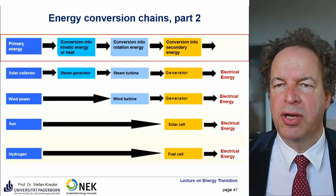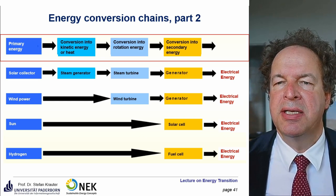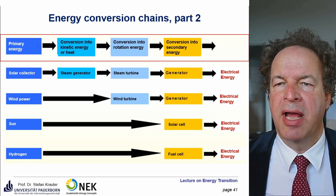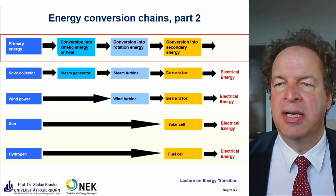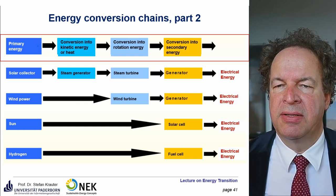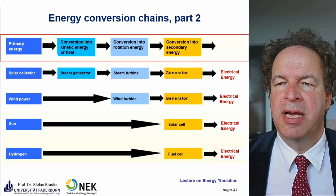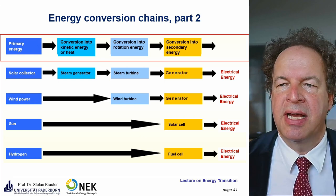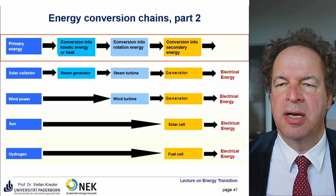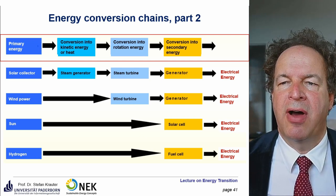The upper line is just the same basic principle. On the second line, if we use a solar collector, we can heat up water or any other medium, create steam, which goes to a steam turbine and drives a generator for electrical energy. Another possibility is wind power — we don't need any intermediates; we can directly convert wind energy into rotation energy, which drives a generator producing electrical energy.